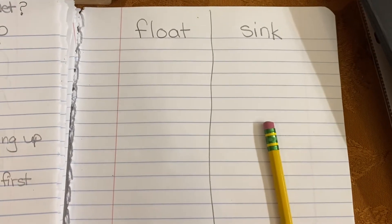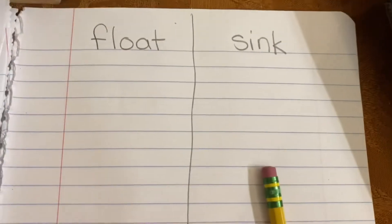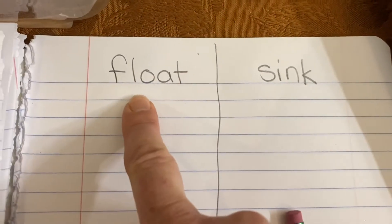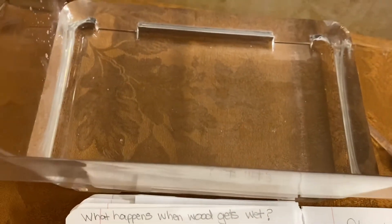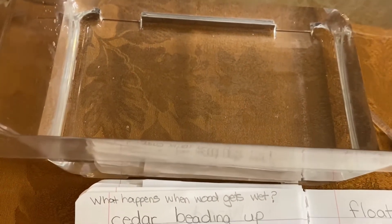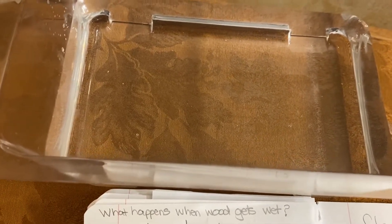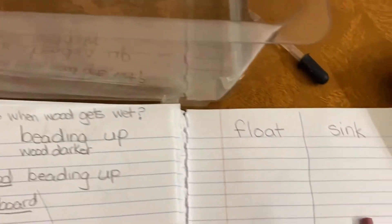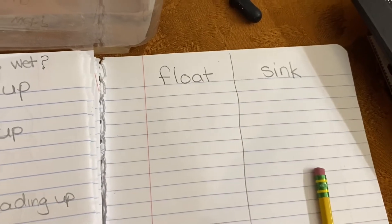Hi scientists! Are we ready to do another experiment with wood? Today we're going to talk about two words: float and sink. We're going to use this little tub of water. At home, if you're doing this experiment, you can use a clear bowl and fill it with water. You're going to do a little bit of experimenting on things that float and things that sink.